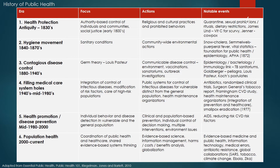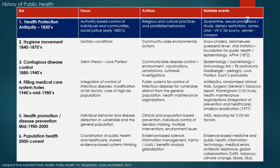Let's review a brief history of public health. There are essentially six eras of public health history including: 1) Health Protection, 2) Hygiene Movement, 3) Contagious Disease Control, 4) Filling Medical Care System Holes, 5) Health Promotion and Disease Prevention, and 6) Population Health. Let's first consider the health protection era.